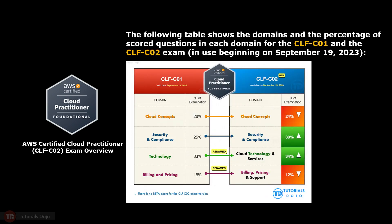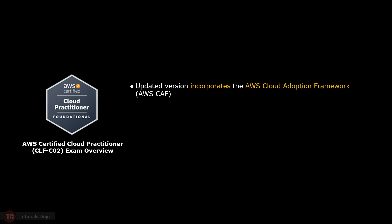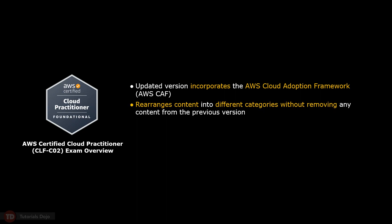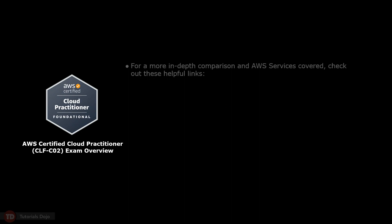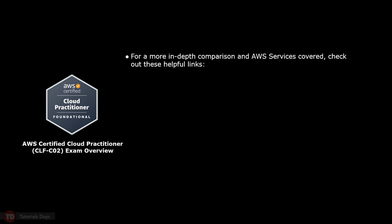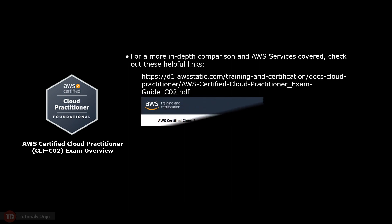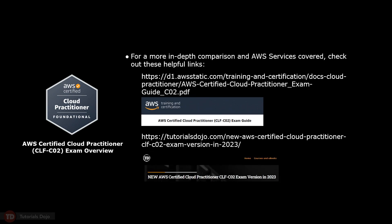The following table shows the domains and the percentage of scored questions in each domain for the CLF-C01 and the CLF-C02 exam, in use beginning on September 19, 2023. The updated version incorporates the AWS Cloud Adoption Framework (AWS CAF) and rearranges content into different categories without removing any content from the previous version. For a more in-depth comparison and AWS services covered, check out the helpful links provided. I hope this video has been informative — see you in the next one.